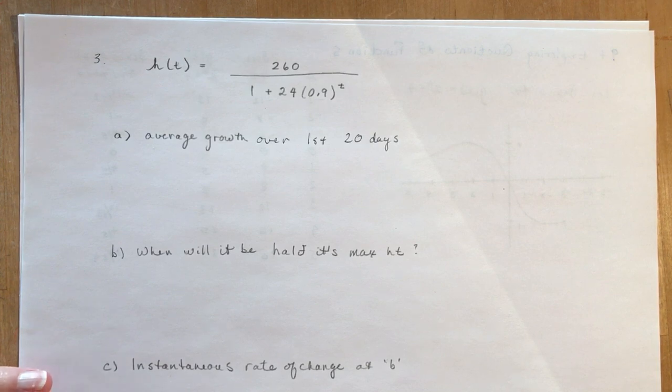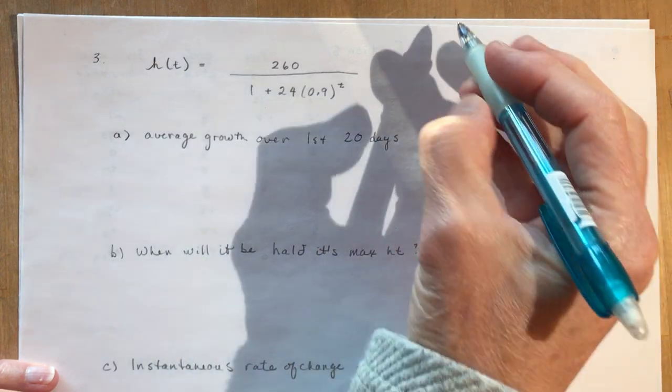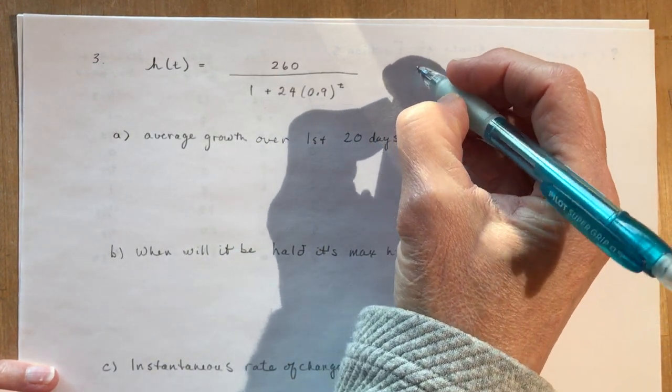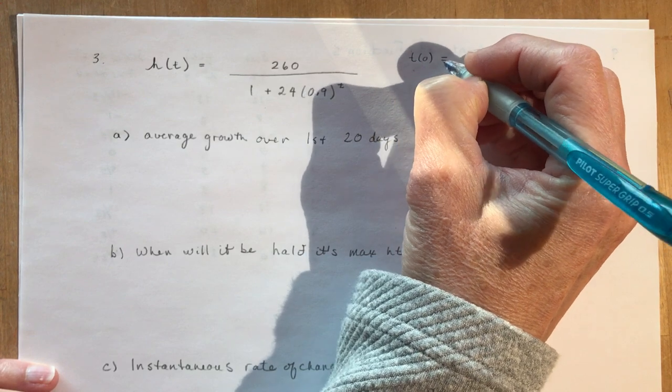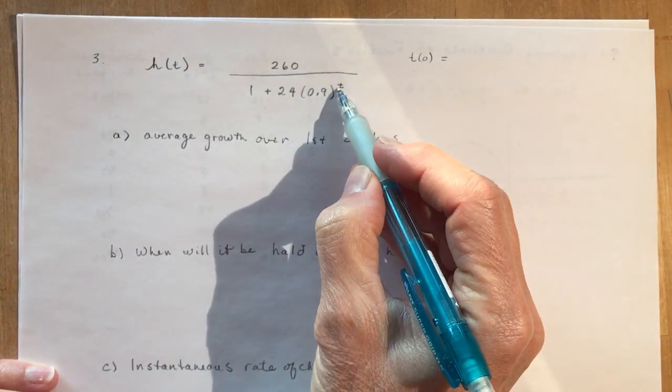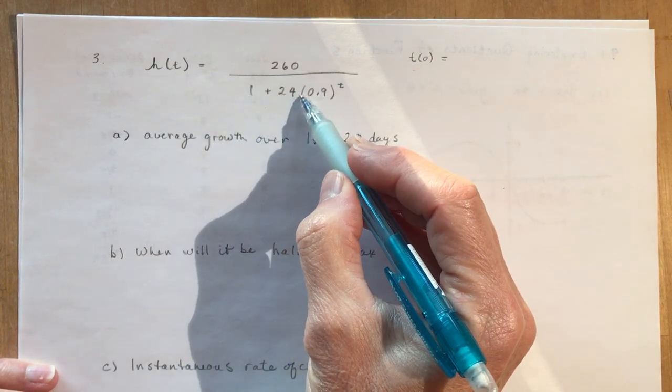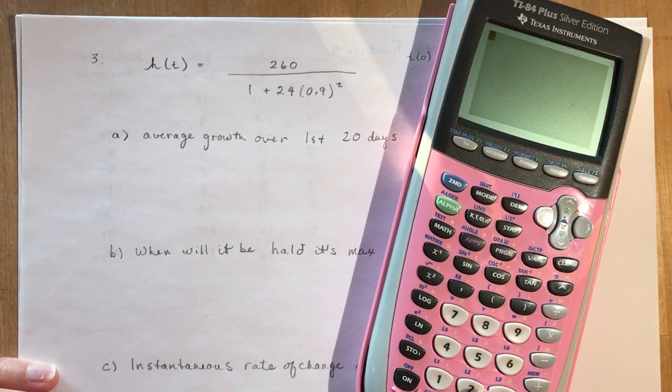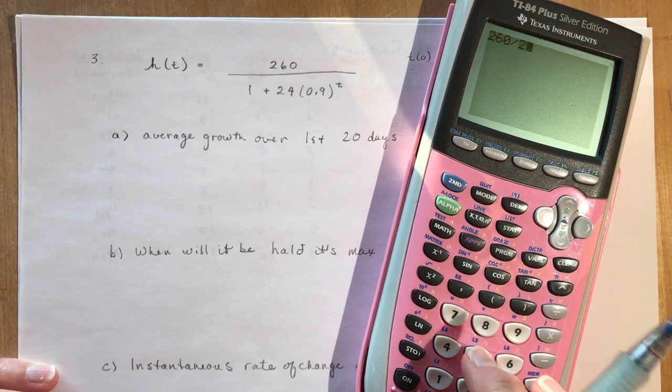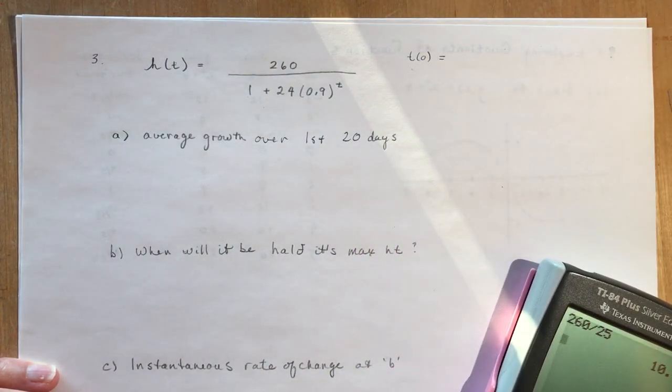The first question says calculate the average rate of growth of the sunflower over the first 20 days. So for the first 20 days, the average growth. You have to know what was the growth at time zero. So we need t(0) and we need t(20). t(0) equals—I'm going to plug in zero here—so 0.9 to the power of zero is 1, 1 and 24 is 25, and then I'll have to divide here.